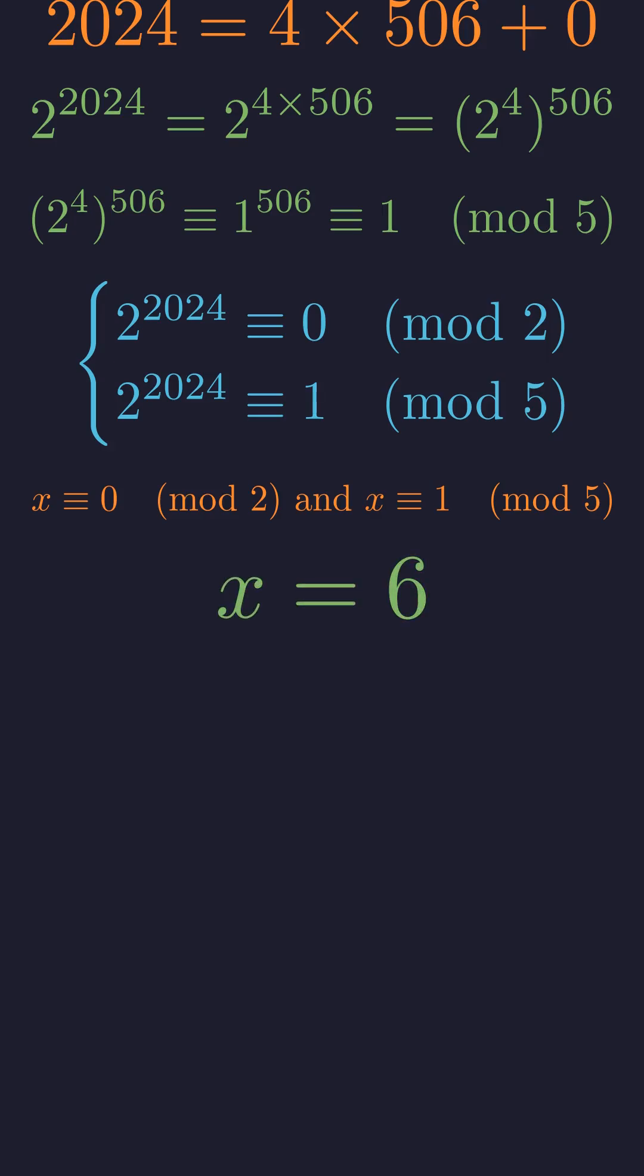The answer is 6. It's even, satisfying our first condition, and 6 divided by 5 does indeed give remainder 1.